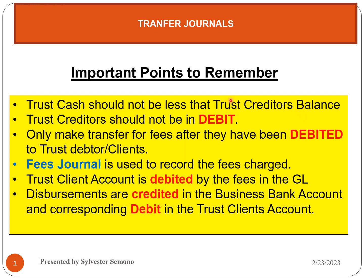If a client pays you in advance, you must have a trust creditor account for that client. For example, if Sylvester gives you money in advance so you can perform services for him, you need to open an account for Sylvester as a trust creditor. That balance must always be a credit, because receiving money in advance creates a liability. All trust creditor balances must carry a credit balance to show a favorable balance.